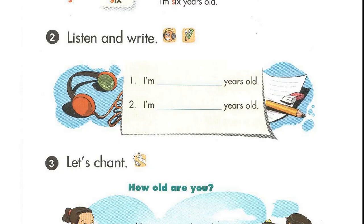Page 28, Lesson 3, Activity 2. Listen and write. 1. I'm 5 years old. 2. I'm 6 years old.